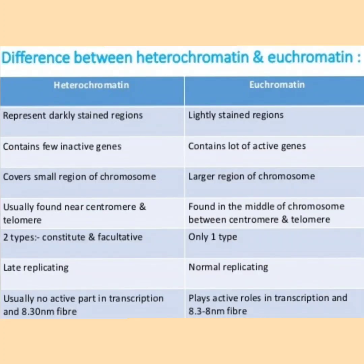Differences between heterochromatin and euchromatin: Heterochromatin represents darkly stained regions, contains few inactive genes, covers small regions of the chromosome, and is usually found near centromere and telomere. Euchromatin represents lightly stained regions, contains many active genes, and is a larger region found between centromere and telomere. Two types of heterochromatin exist: constitutive and facultative. Heterochromatin is late replicating; euchromatin is normally replicating. Heterochromatin is not transcriptionally active (30 nanometer fiber), whereas euchromatin plays an active role in transcription.